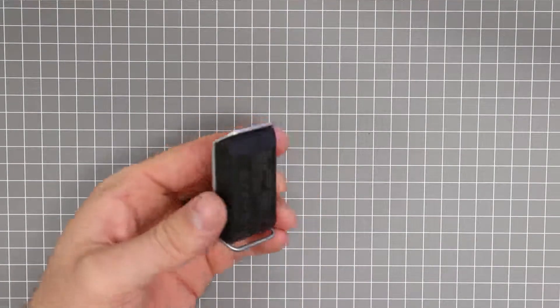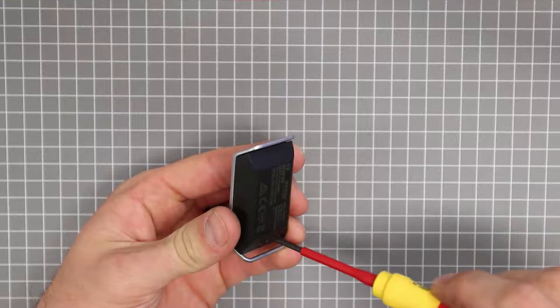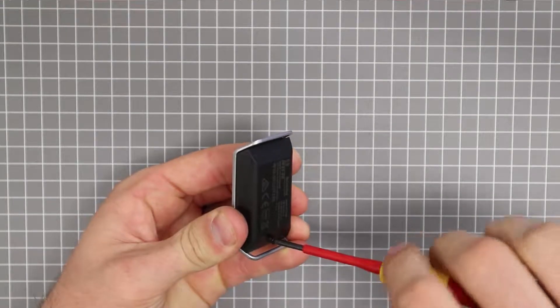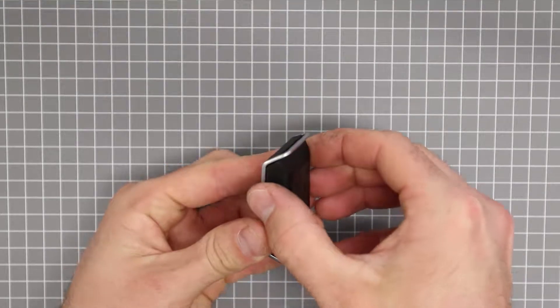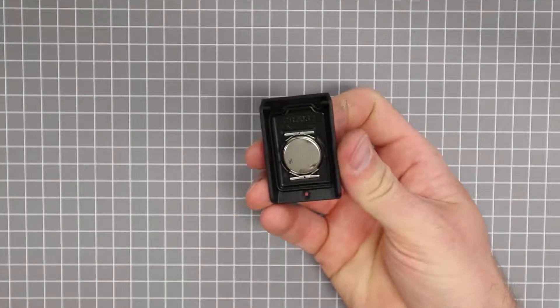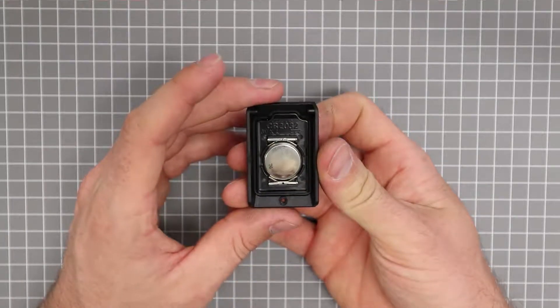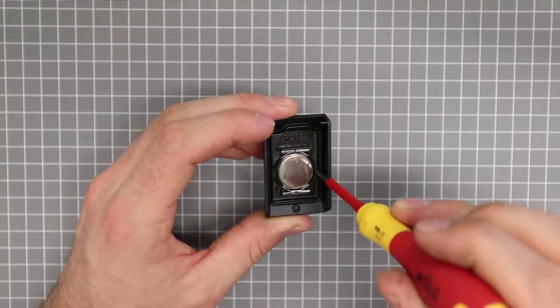To access the battery compartment on the first remote remove the screw on the rear of the remote and then lift the rear cover up and off. The battery for this remote is located in the rear cover and can be gently dislodged with the screwdriver.